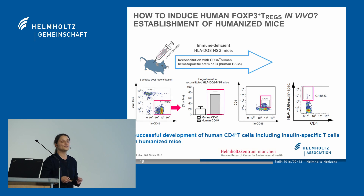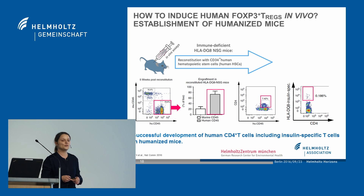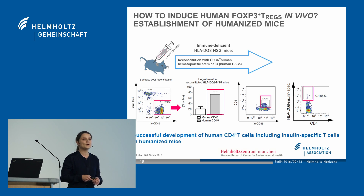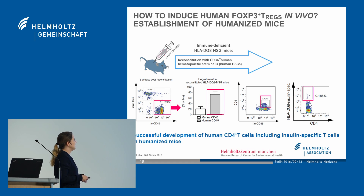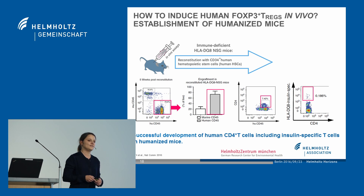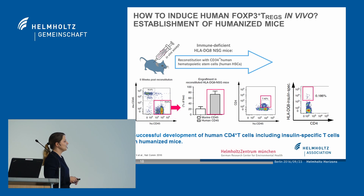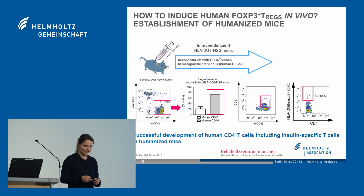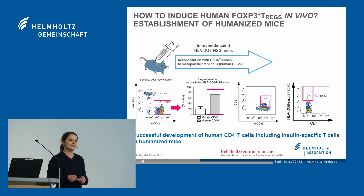We then asked how we can induce these human T-rex in vivo. To this end, we reconstituted immune-deficient NSG mice with human hematopoietic stem cells, permitting the development of humanized mice. When we looked five weeks later for reconstitution — shown here for human CD45 on the X axis versus murine CD45 on the Y axis — we observed high engraftment efficacy with nearly 80% of the cells being human CD45-positive immune cells. Within the human CD45-positive population, we also identified CD4-positive T cells, and within the blue dots in the red channel, insulin-specific T cells, indicating successful development of human CD4-positive T cells including insulin-specific T cells in these humanized mice.